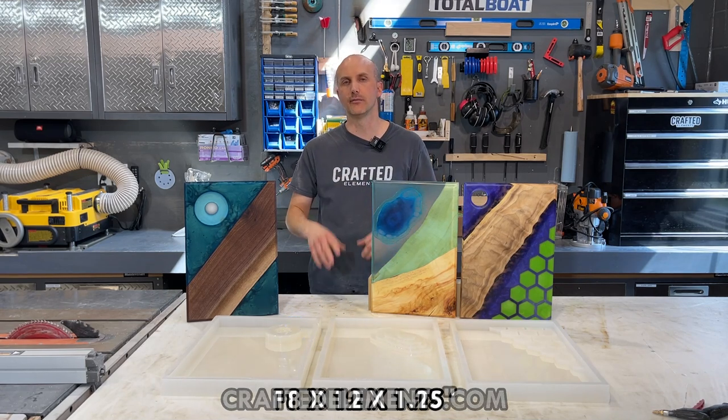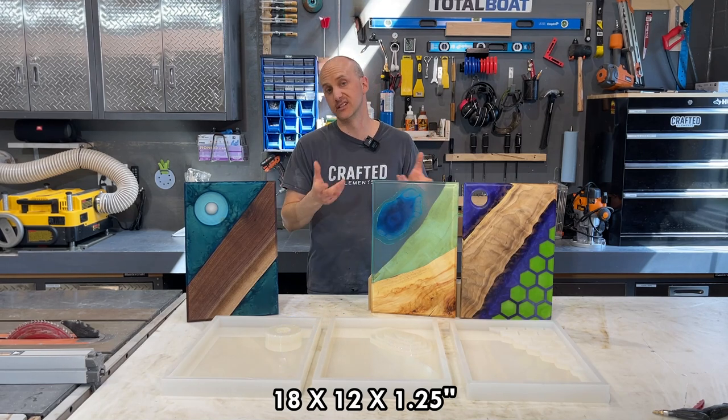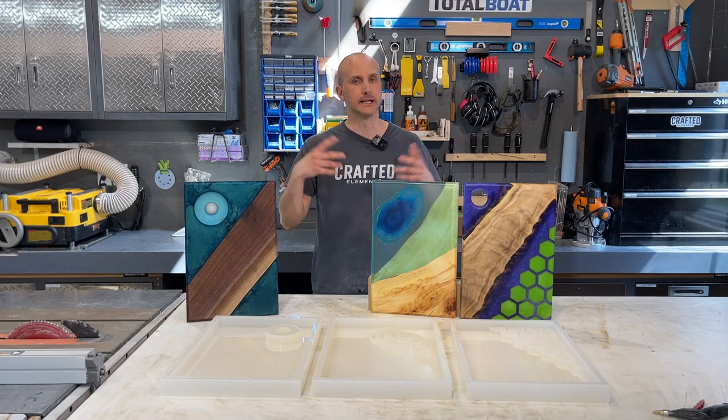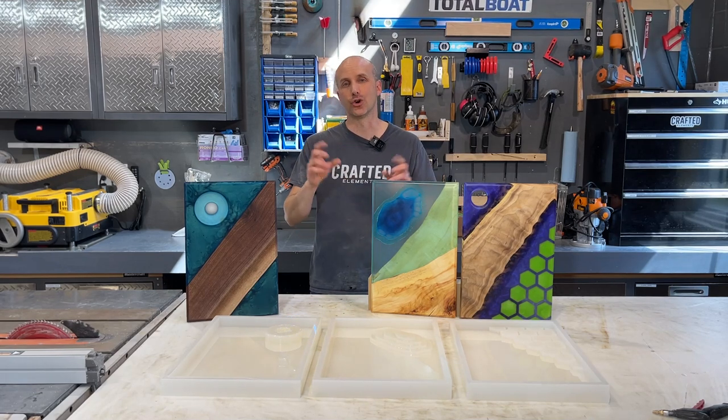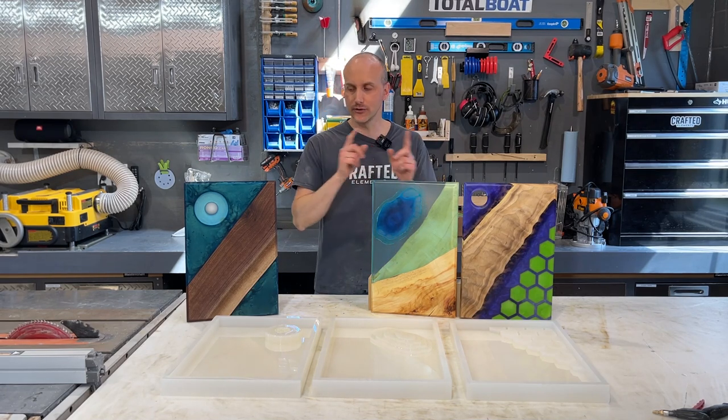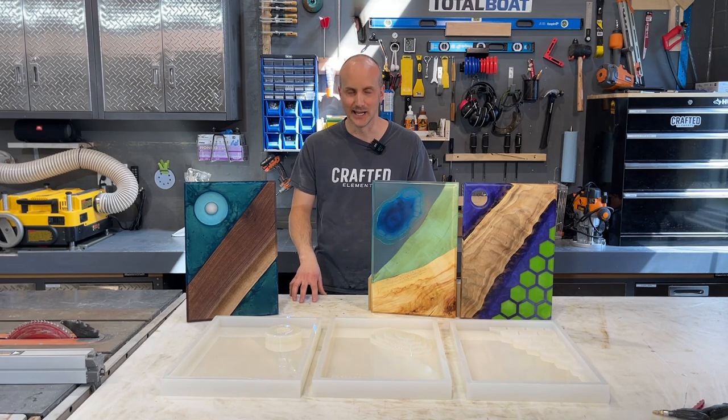Right now they are 18 by 12 by one and a quarter inch deep, which gives you enough to of course use a significantly sized piece of edge wood and effectively after trimming, planing, sanding, all that end up with an inch or more thickness of final board. Let's go to the video to watch how each of these are made and hopefully that will answer any questions you have about our new inlay molds.